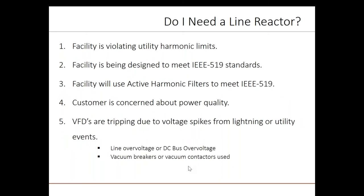Here are some situations where a line reactor can be beneficial. Firstly, if the facility is violating harmonic limits set by the utility, and punitive action may be threatened, line reactors will provide some harmonic mitigation. If there are a lot of non-linear loads like VFDs, then line reactors alone will not likely achieve IEEE 519 compliance. Further steps, like active harmonic filtering or passive harmonic filters, may be needed.